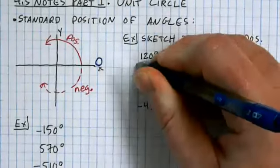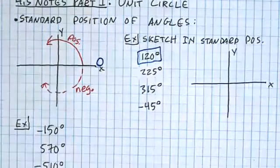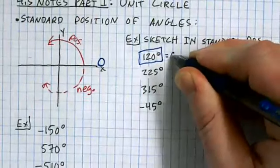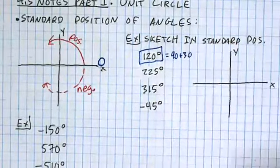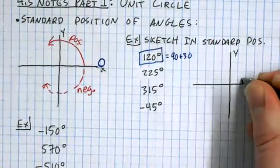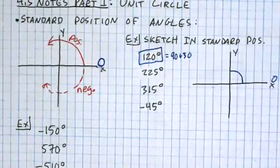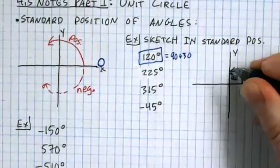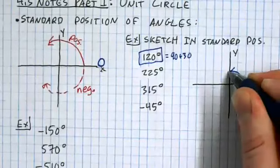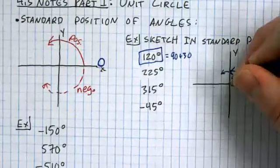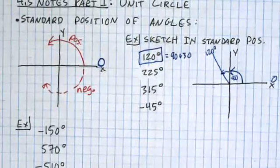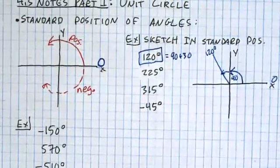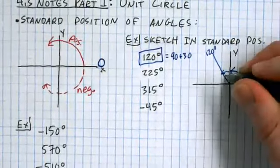When I think about a 120 degree angle in standard position, I'm going to think of that as 90 plus another 30. So if I start here at zero on the positive x-axis, I would rotate 90 degrees - it's positive so I'm going this way - that's gotten me 90 right there. And then I want to go another 30 after that. So that's not very far into the second quadrant. That's going to give me a 120 degree angle.